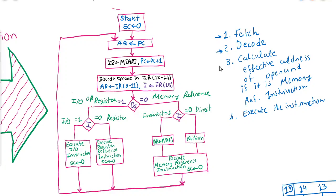All instructions will pass through all these phases: fetch, decode, calculate the effective address of the operand if it is a memory reference instruction, and then execute the instruction. The instruction cycle will start with the sequence counter set to zero, so the computer knows it can start with the next instruction. The program counter register will be used to hold the initial address of the program or the first instruction.